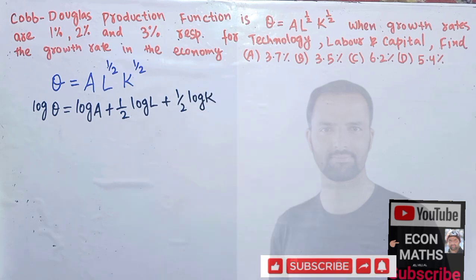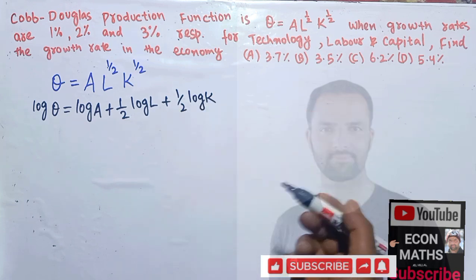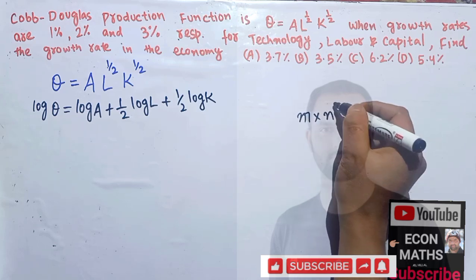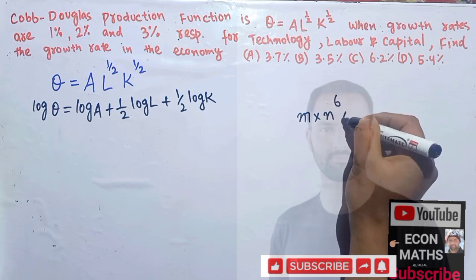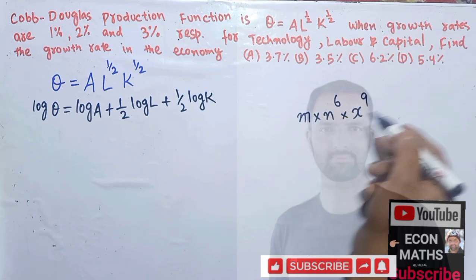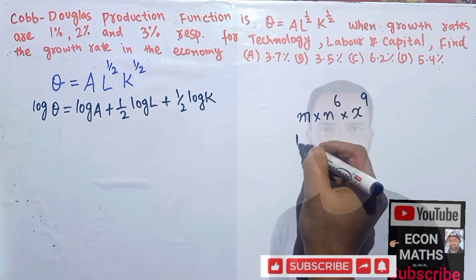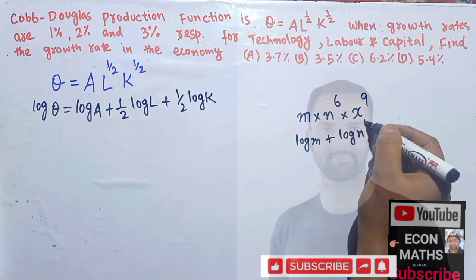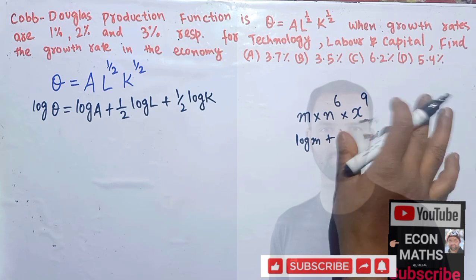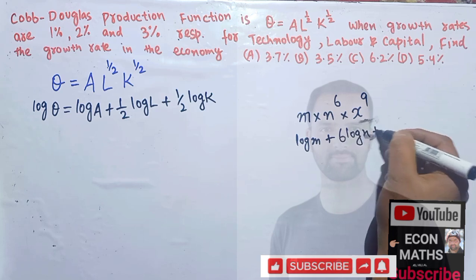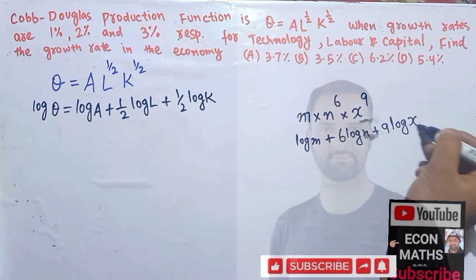This is simply the law of logarithm. For example, if we have M into N to the power 6 into X to the power 9, and if we take the log of this, it becomes log M plus 6·log N plus 9·log X. The exponents become coefficients. I have used these simple logarithm rules here.